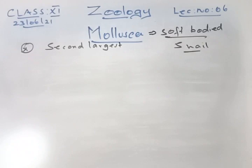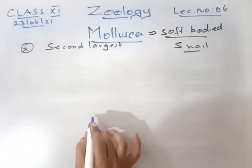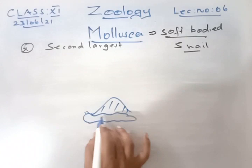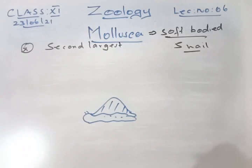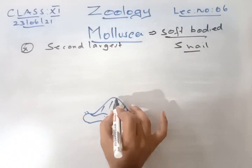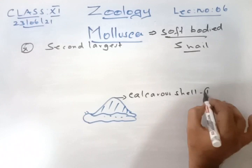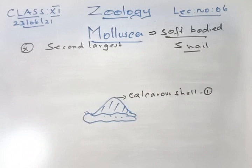For the distinct features I will explain using the snail diagram. First, the outer shell is made up of calcium — it has a calcareous shell. Second, the body is unsegmented. Third, it has a distinct head.